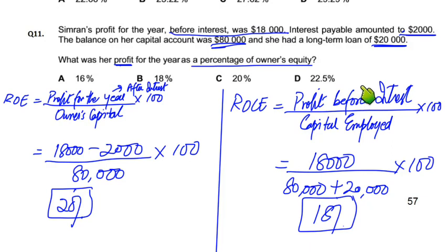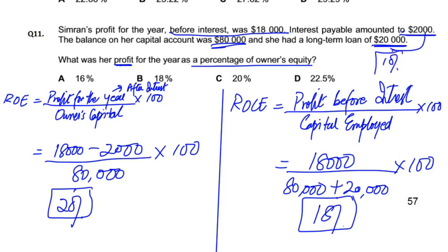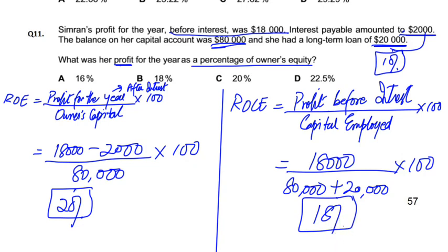If you look at one more thing here — the loan taken was 20,000 and the interest being paid is 2,000, so the lender's return is 10%. The owner's own return is 20%, the lender's return is 10%, but the average return on capital employed on total investment comes out to 18% — the average fell. This was a very important question.